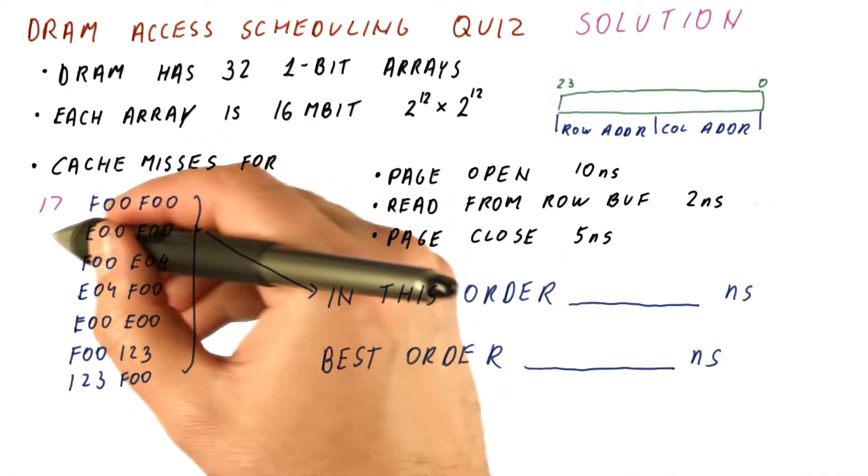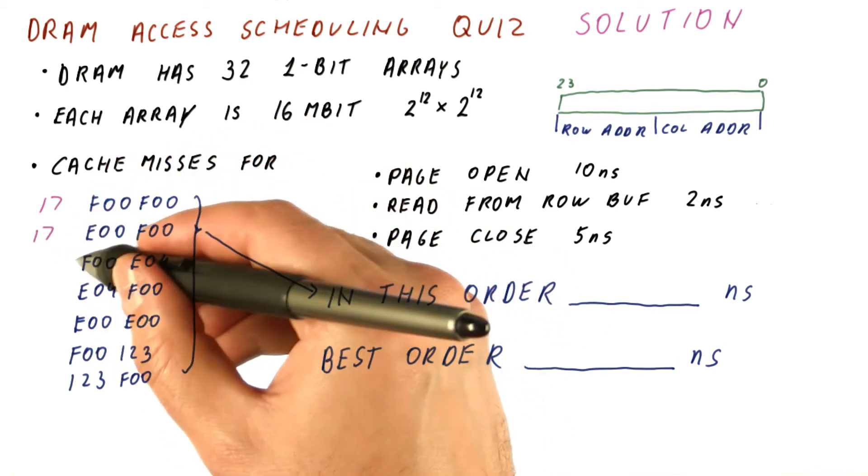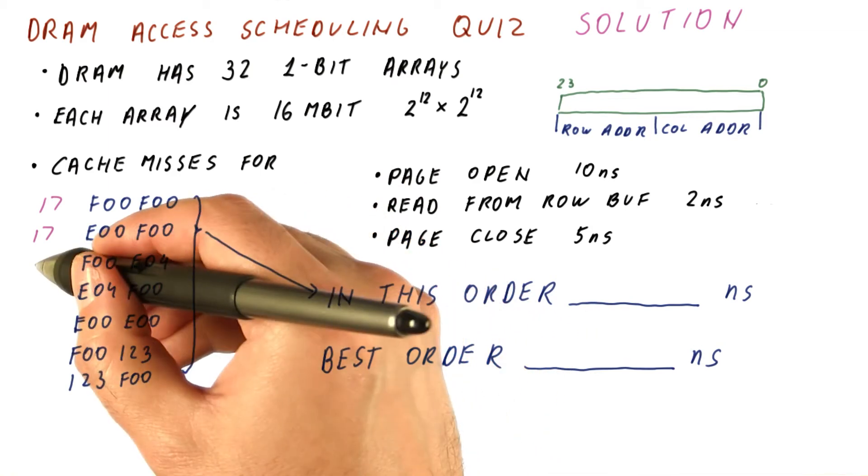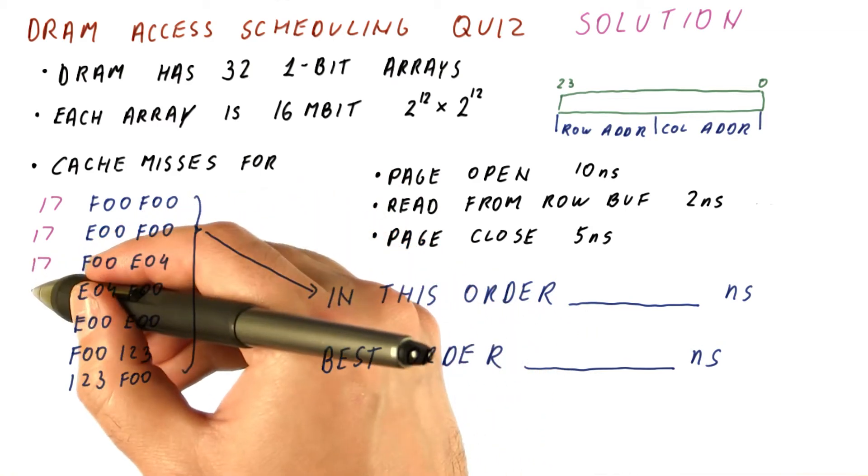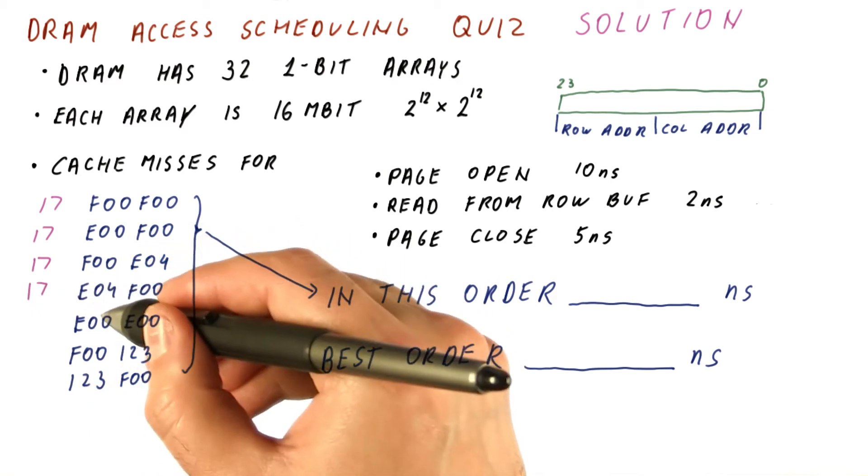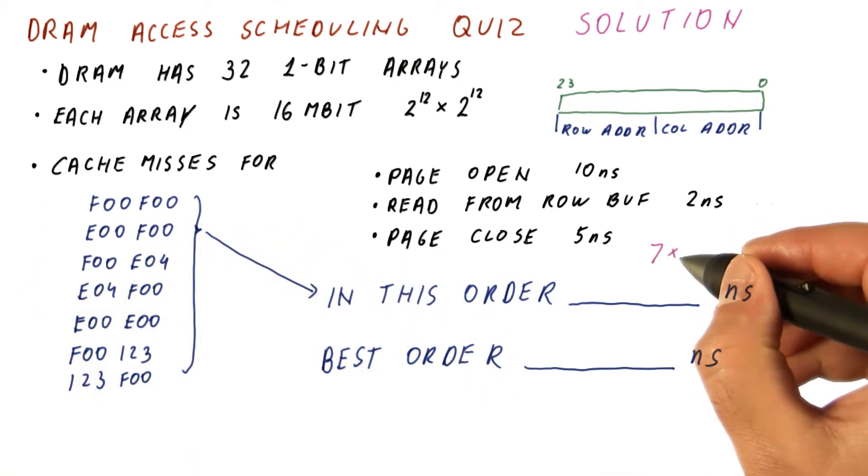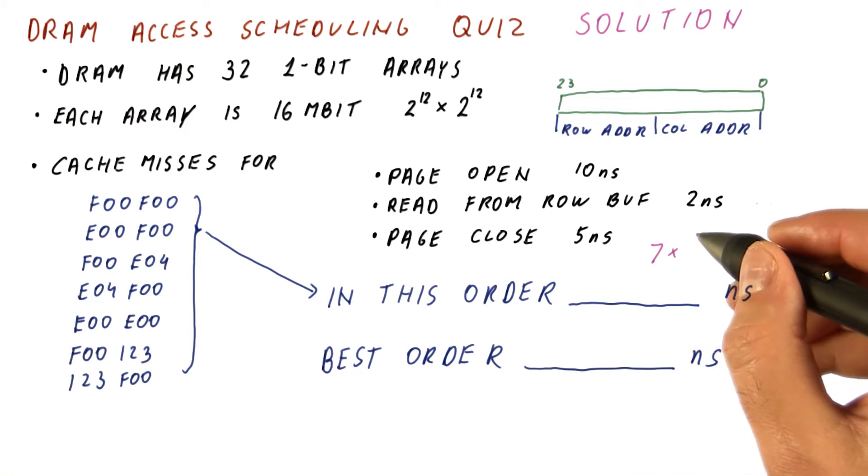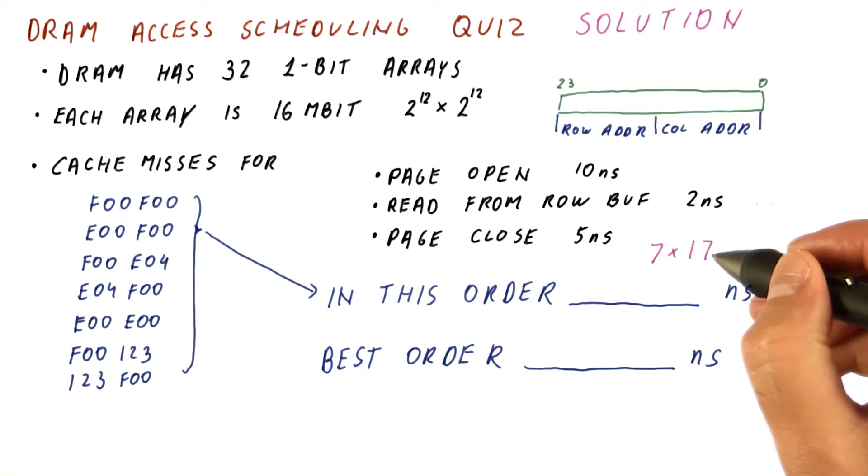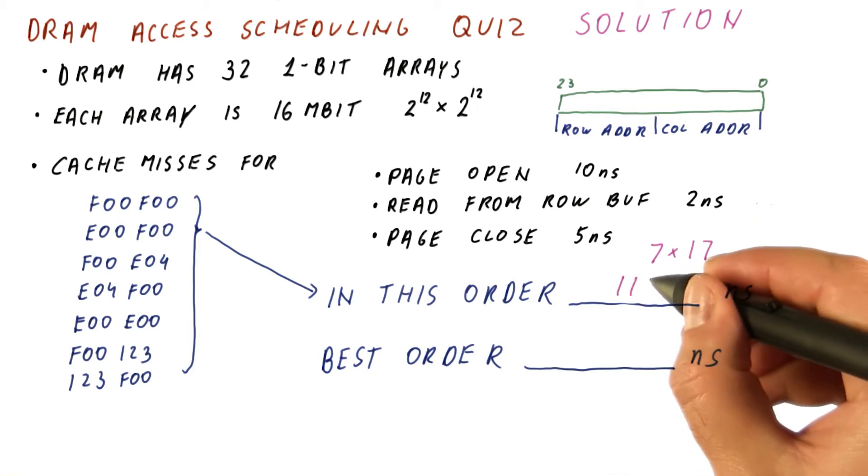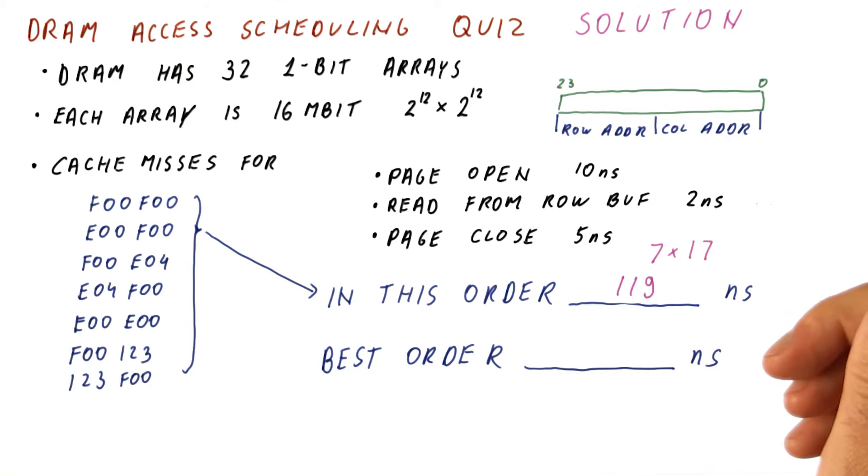We will spend another 17 here. We will then spend another 17 here, because it's again a different row. 17 here, and here, and here, and here. Overall, we have seven accesses, each to a different page. So each of them requires 17 nanoseconds, for a total of 119 nanoseconds.